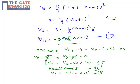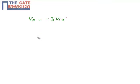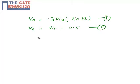Now I have two equations and two unknowns, V0 and VIN. Equation 1: V0 = -3·VIN·(VIN + 2). Equation 2: V0 = VIN - 0.5. Solving these two equations simultaneously, I get the values V0 = -0.43 volts and V0 = -2.9 volts.